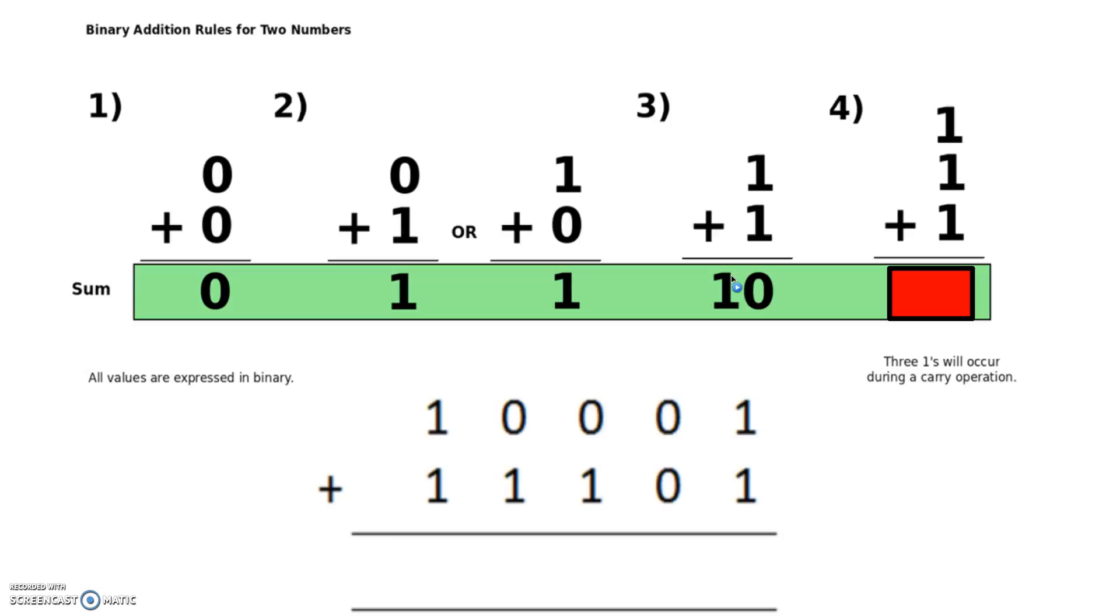The last case we need to consider is where we're adding three ones together, so one plus one plus one. We know the answer is three, so three in binary is one two and one one.